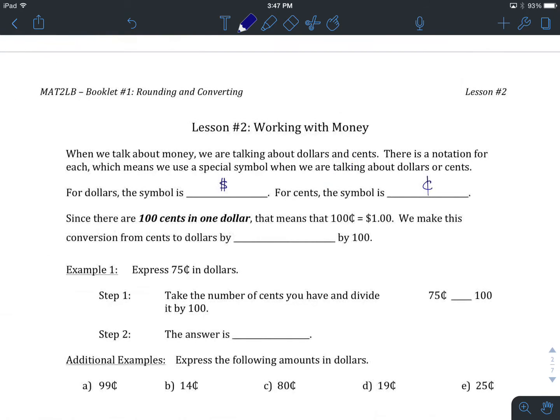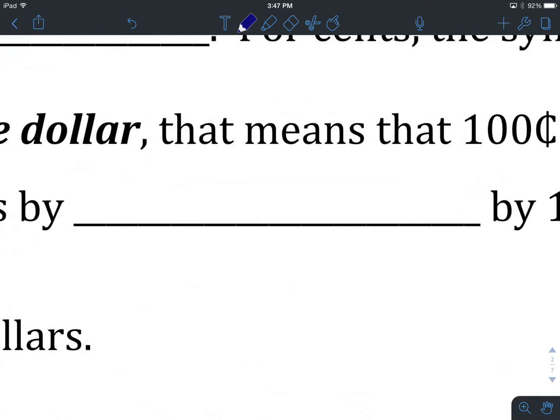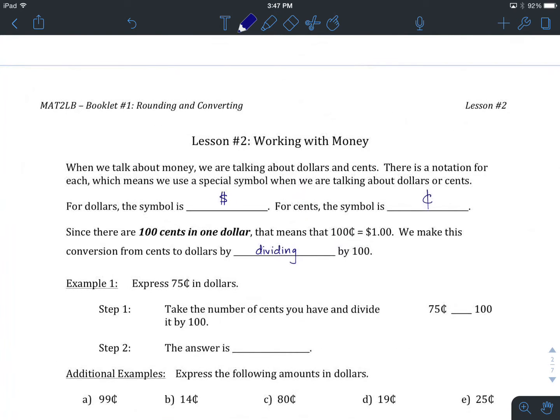Moving back and forth between these two different ways of talking about money, either dollars or cents, requires a mathematical operation. Since there are 100 cents, 100 pennies or parts that make up one dollar, it means that we can convert from cents to dollars by dividing by 100. You may use your calculator to do this, or any sort of mental arithmetic shortcuts.